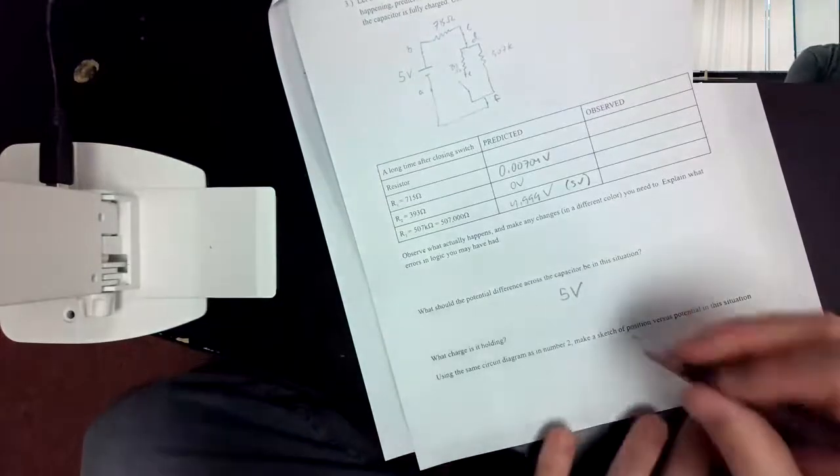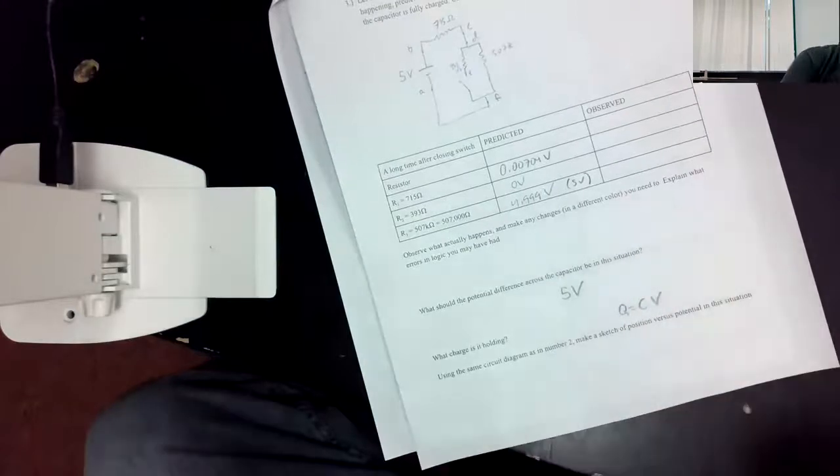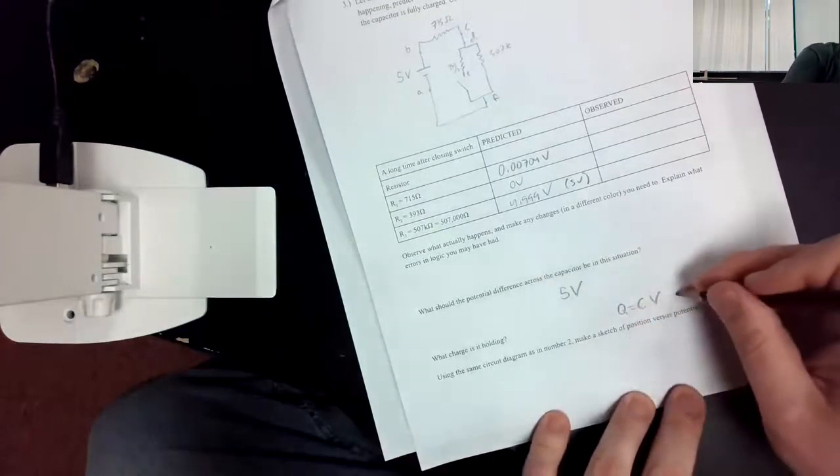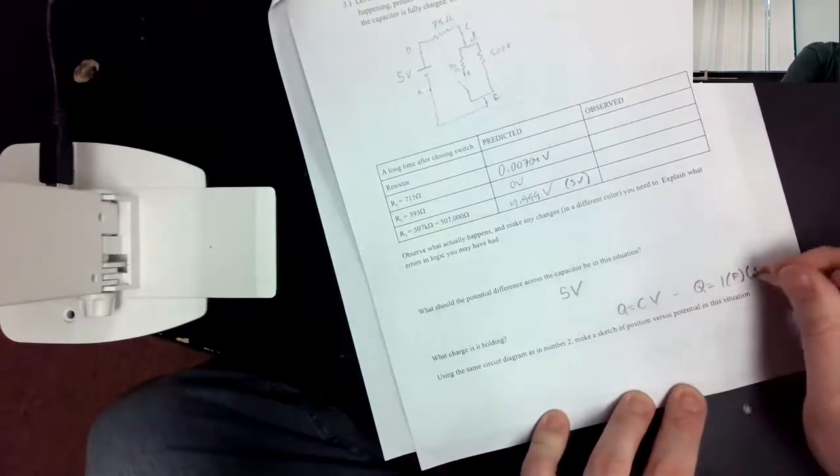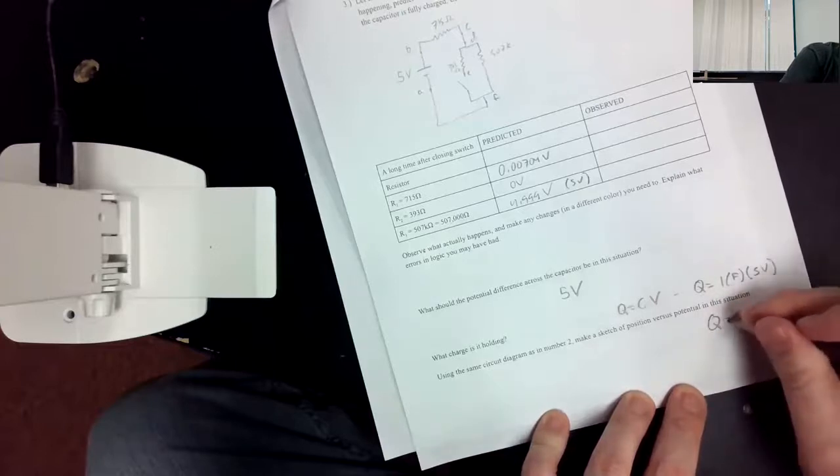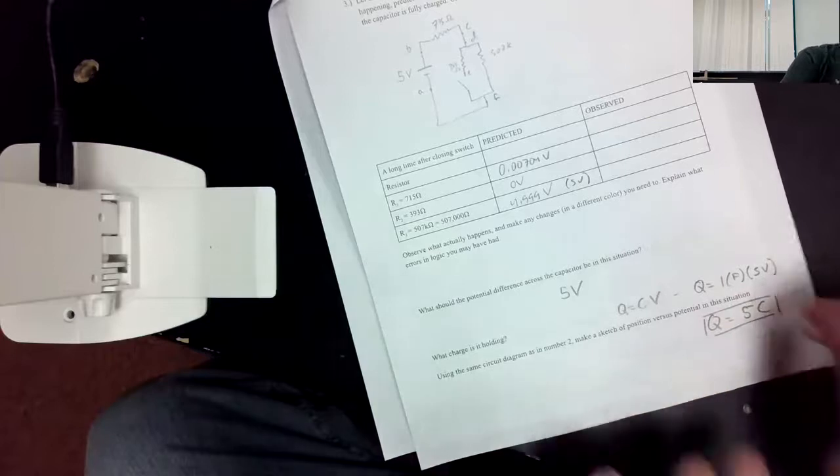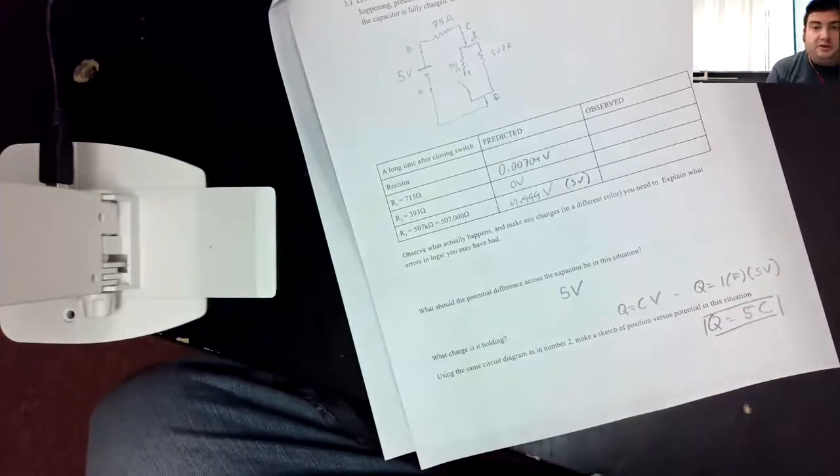What do we know about charge? Charge is equal to capacitance times voltage. This is a 1 farad capacitor and the potential difference is 5 volts, so the charge will be 5 coulombs. That's what we got for charge across this capacitor.